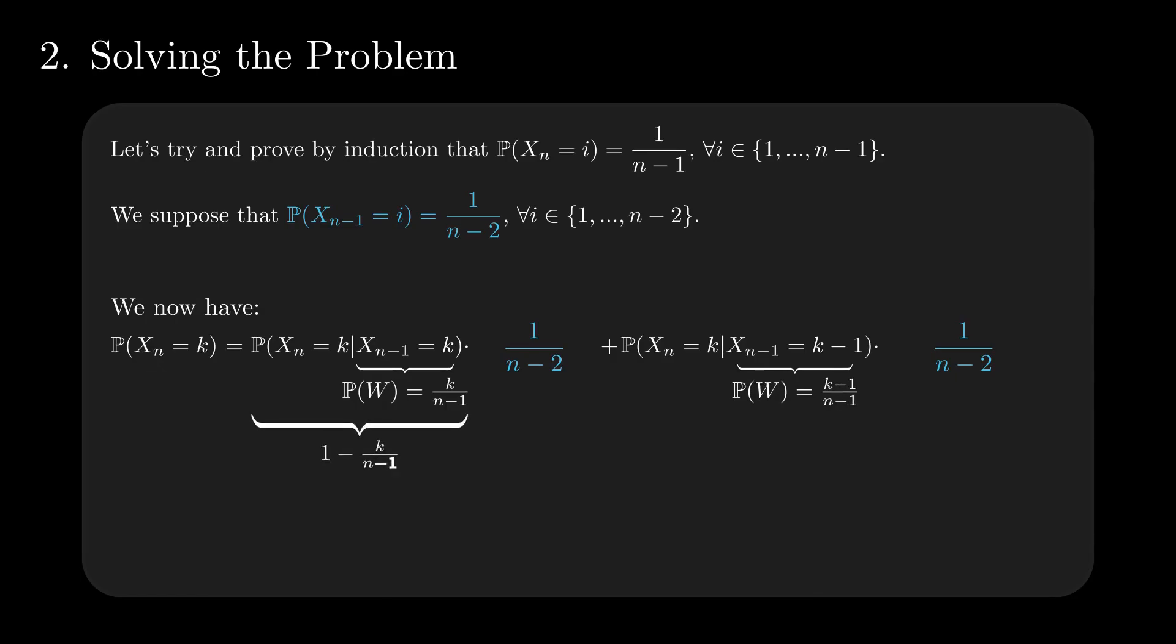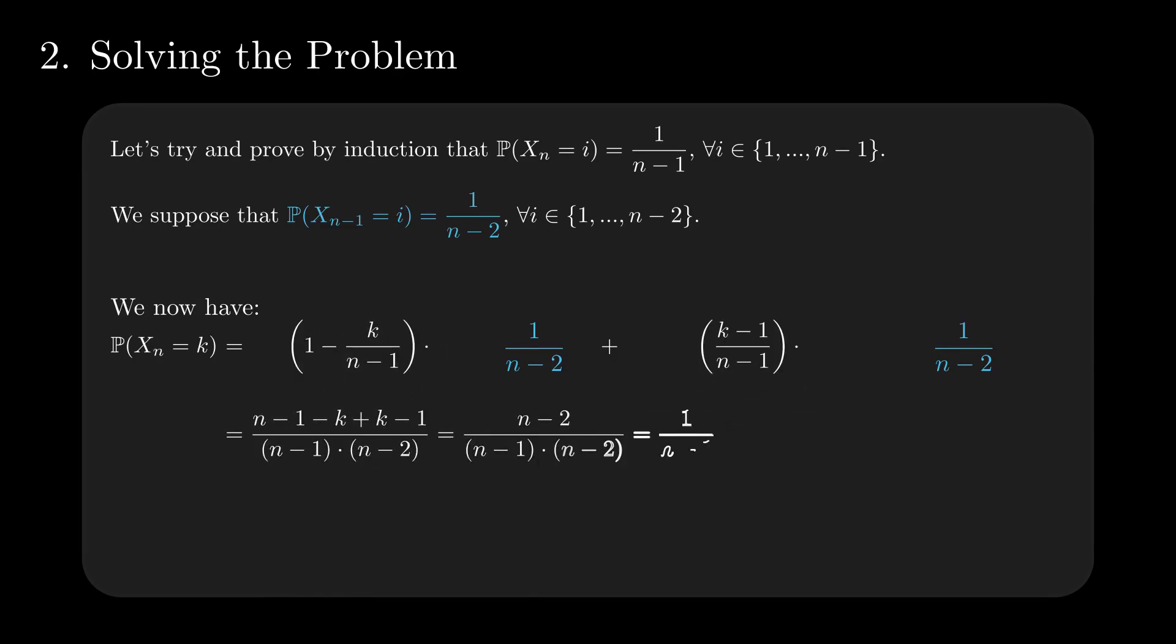In the case of the first term, we need the last one to be a miss, and in the second one, a hit. Some arithmetic later, the final probability is 1/(n-1). We now conclude the induction step.